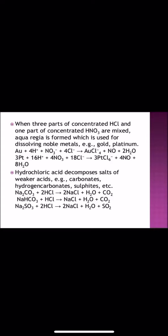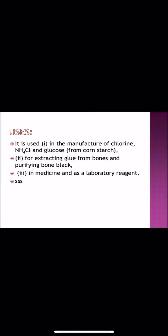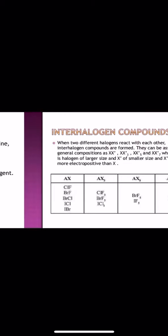When three parts of concentrated HCl and one part of concentrated HNO3 are mixed together, we get aqua regia, which is used for dissolving noble metals as given in these equations here. Hydrochloric acid decomposes salts of weaker acids, for example, carbonates, hydrogen carbonates, sulfites, etc. And HCl is used in the manufacture of chlorine, ammonium chloride, glucose, for extracting glue from bones and purifying bone black. It is used in medicine as a laboratory reagent.